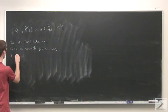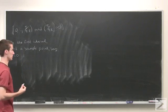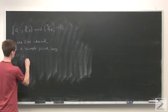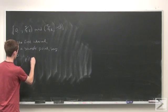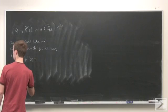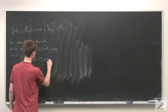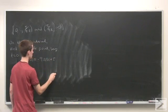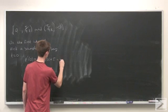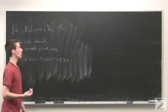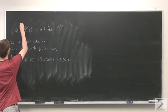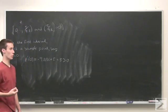So t equals 0, and we'll find out what is the velocity doing there. p prime of 0 is going to be negative 9.8 times 0 plus 5, which is equal to 5 greater than 0.